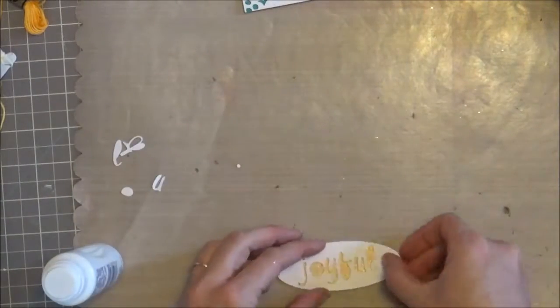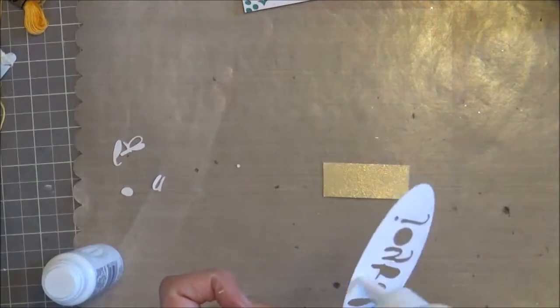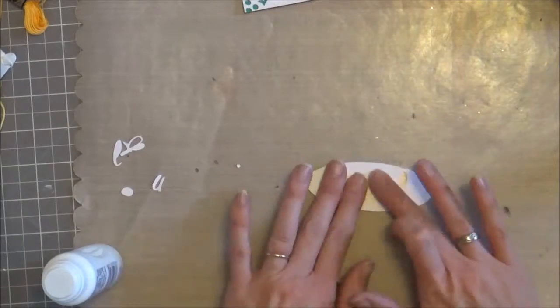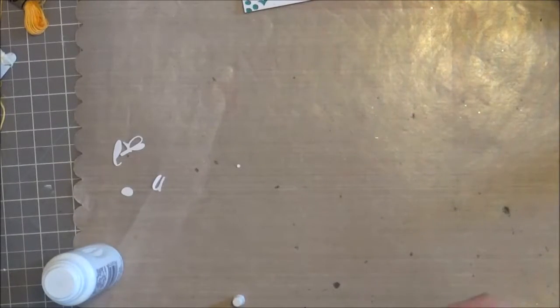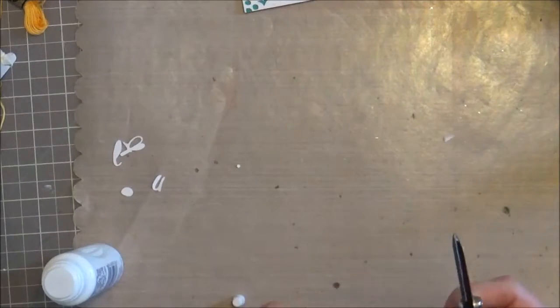I'm going to adhere that behind my oval using quick dry adhesive. This stuff works great on paper, doesn't warp or bubble. I did have to trim a tiny bit off where it was a little inaccurate placing it.